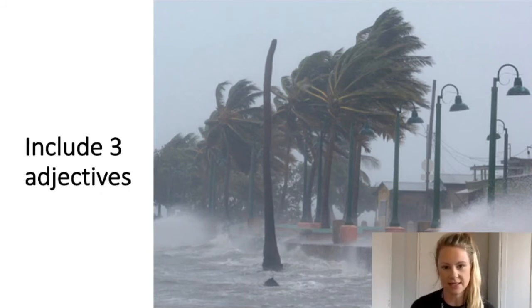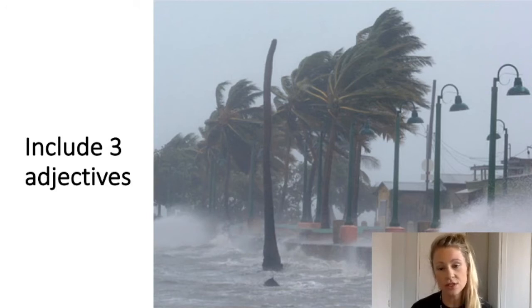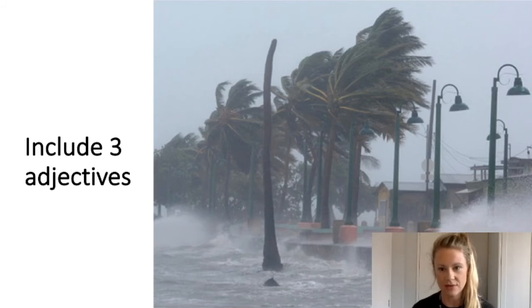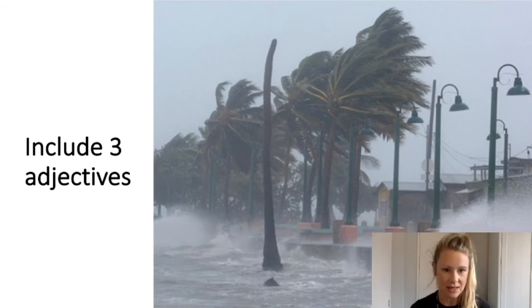The next sentence: you're going to include three adjectives. You can do this in different ways. You can do it in the way I did in my story by putting just a list of three adjectives that set the scene and give the reader a feeling of what's going on. Alternatively, you could use a longer sentence that has three adjectives within it and you're using verbs and nouns.